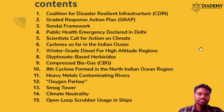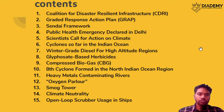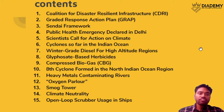Today we will be dealing with the Coalition for the Disaster Resilient Infrastructure, the Graded Response Action Plan, and the public health emergency declaration in Delhi. We will also look at scientists calling for action on climate, different types of cyclones that have recently occurred in the Indian Ocean, winter grade diesel for high altitude regions, glyphosate-based herbicides, compressed biogas, the 8th cyclone formed in the Indian Ocean, heavy metals contaminating our rivers, the oxygen parlour opened in India, the smog tower, climate neutrality, and finally open loop scrubber usage in ships.